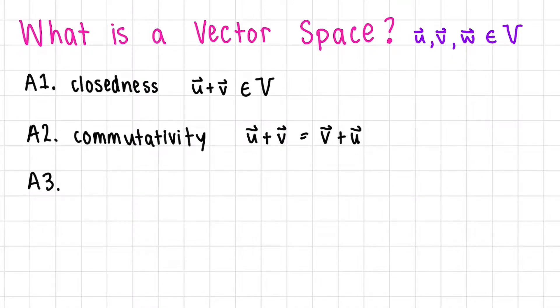A3 is associativity. This means that brackets don't matter. If we have U plus V, and we add this sum to W, our third vector, that's the exact same thing as doing U plus the sum V plus W.